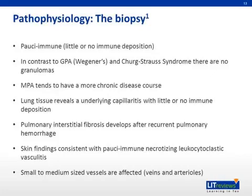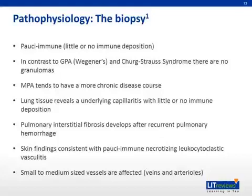In biopsy sections, MPA does not have granulomas, in contrast with GPA Wegener's and Churg-Strauss syndrome, which are pathologically characterized by the presence of granulomas. Additionally, MPA tends to be more chronic, with new and old damage concurrently appearing, and patients have a prolonged course of relapses and flares. Again, a key point is that MPA affects small and medium-sized blood vessels.